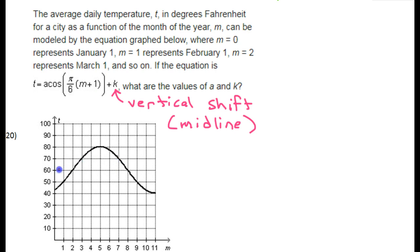Let's see, I am estimating, but this graph seems to hit a low of 40 and a high of 80, so that puts the midline here at 60. Because from 60 we go up 20 and down 20, so if the midline is 60, then that means that K is 60.